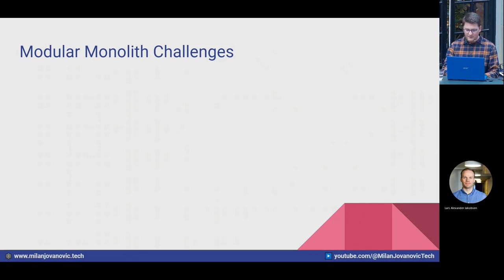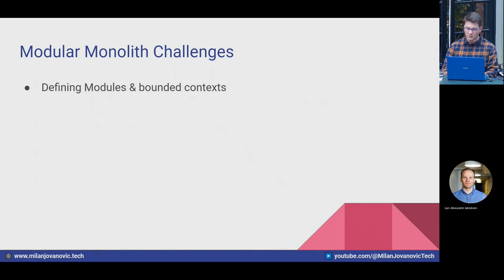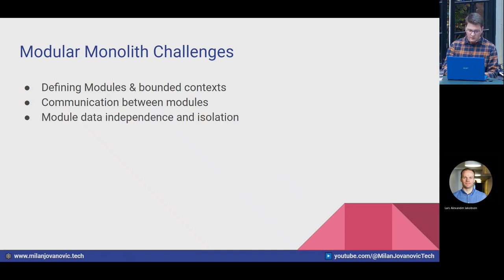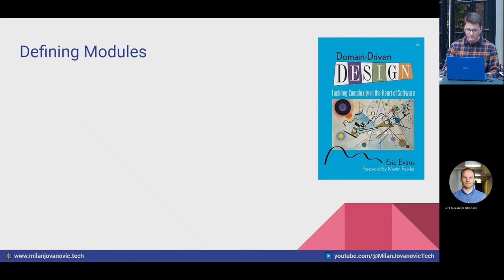With that diagram in mind, let's look at the challenges of building a modular monolith. First, you need to define your modules and decide on your bounded contexts. Then you need to solve how modules will communicate with each other — there are trade-offs there. Another challenge is data independence in your database between modules and how to isolate that data from other modules.